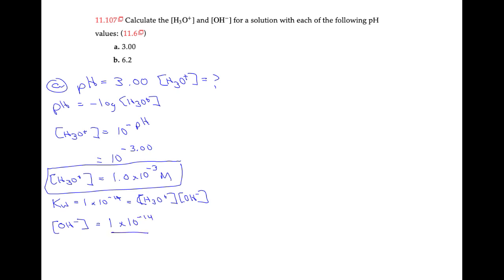So I put 1 times 10 to the negative 14.00, of course this is a constant, divided by my 1.0 times 10 to the negative 3.00. And I end up with the concentration of hydroxide, which is equal to 1.0 times 10 to the negative 11 molar. So that's equal to my hydroxide concentration, so I'll put that in here.